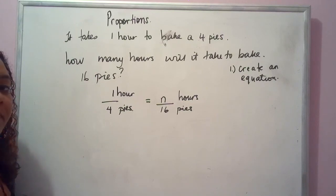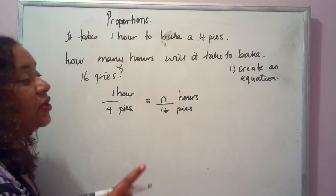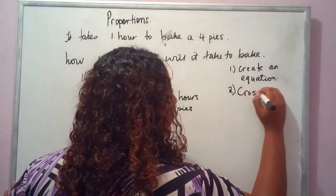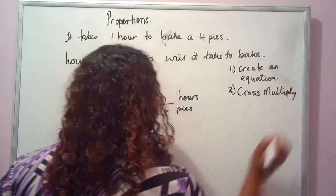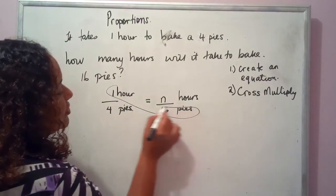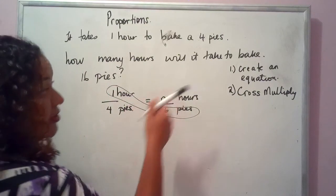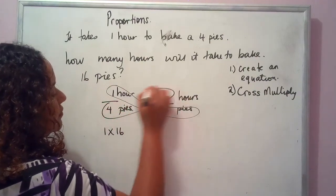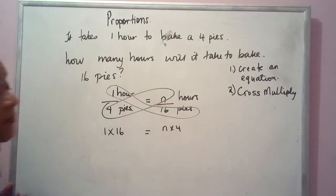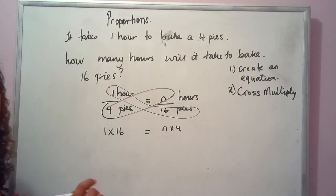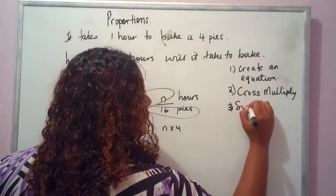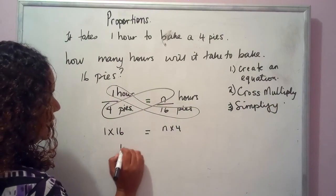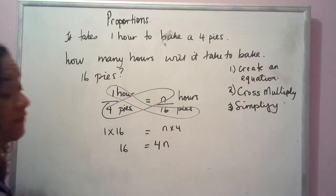We're going to go through the proportional method first. Step one: create an equation. Step two: cross multiply. You multiply across, writing it as another equation: one by 16 is equal to N times four. Step three: simplify. Since we have one here, we just say 16 is equal to 4N.